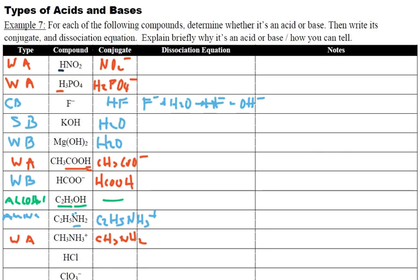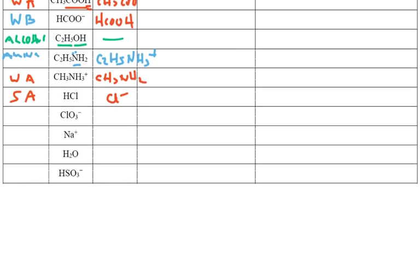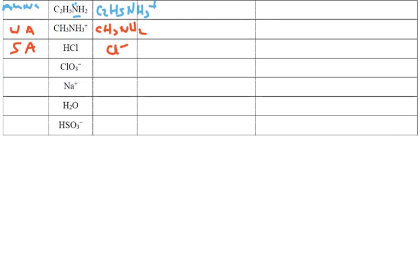HCl, the classic strong acid. And when it donates, it would be Cl-, and that Cl- is going to be the conjugate base of that strong acid. So it's going to be not a good acceptor.